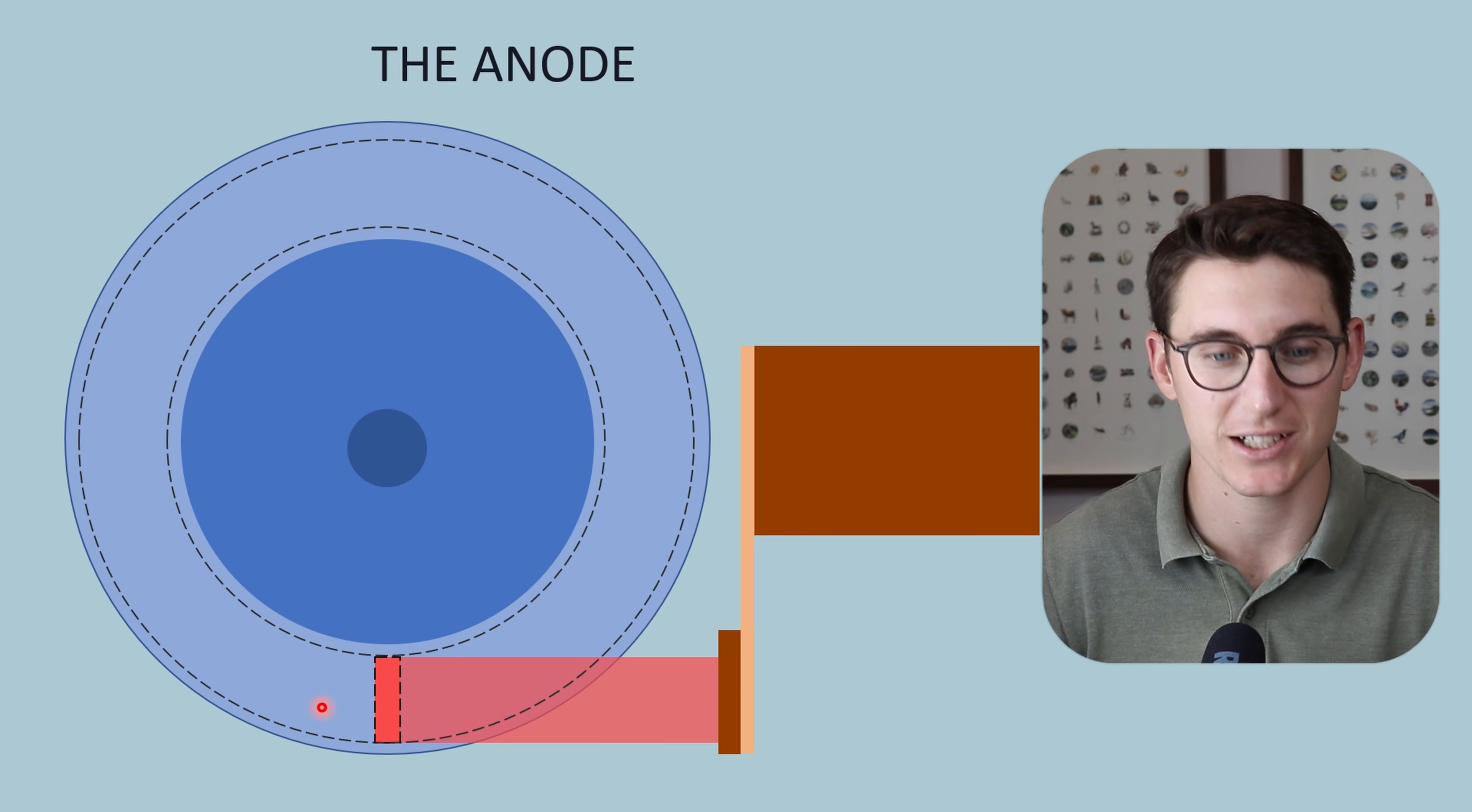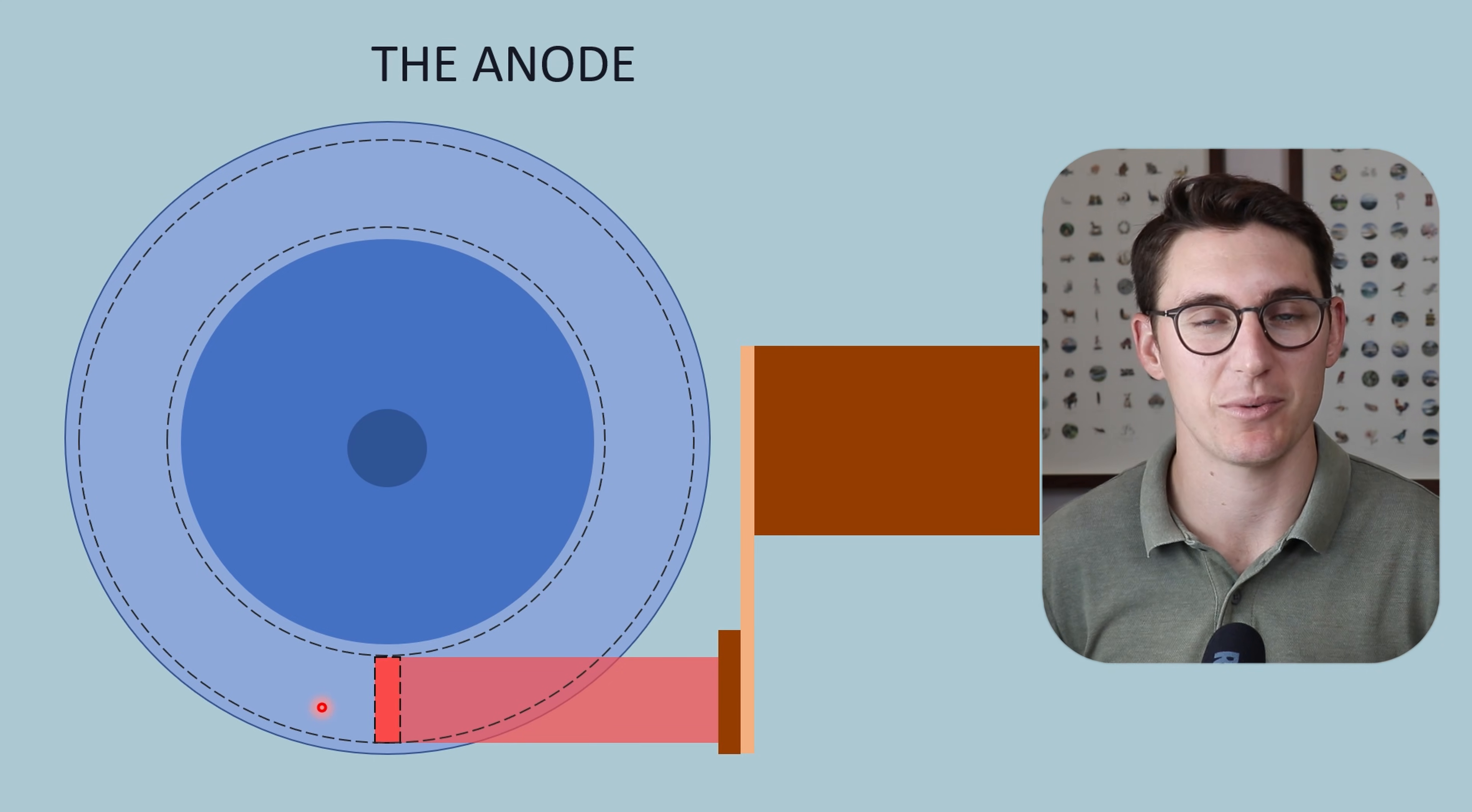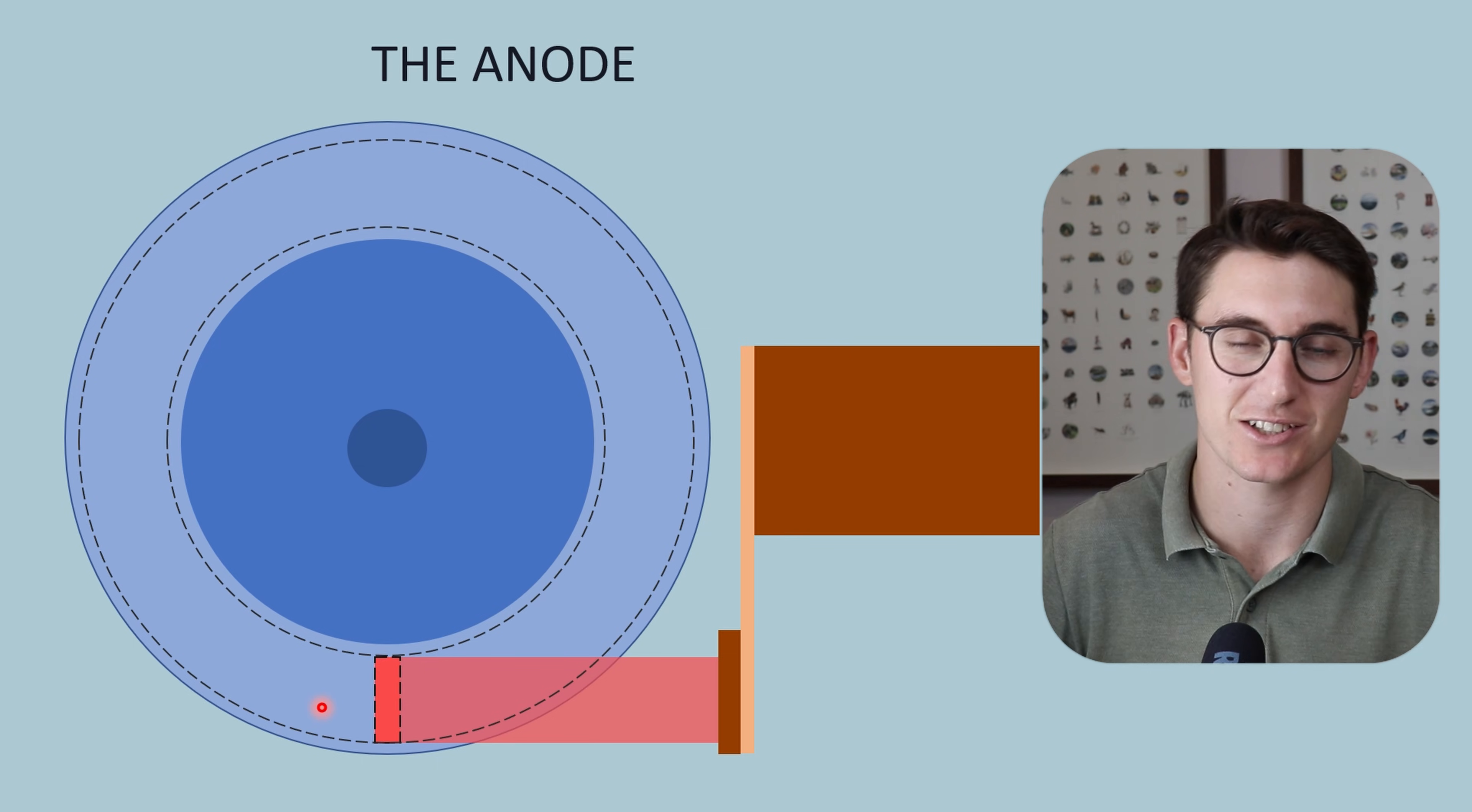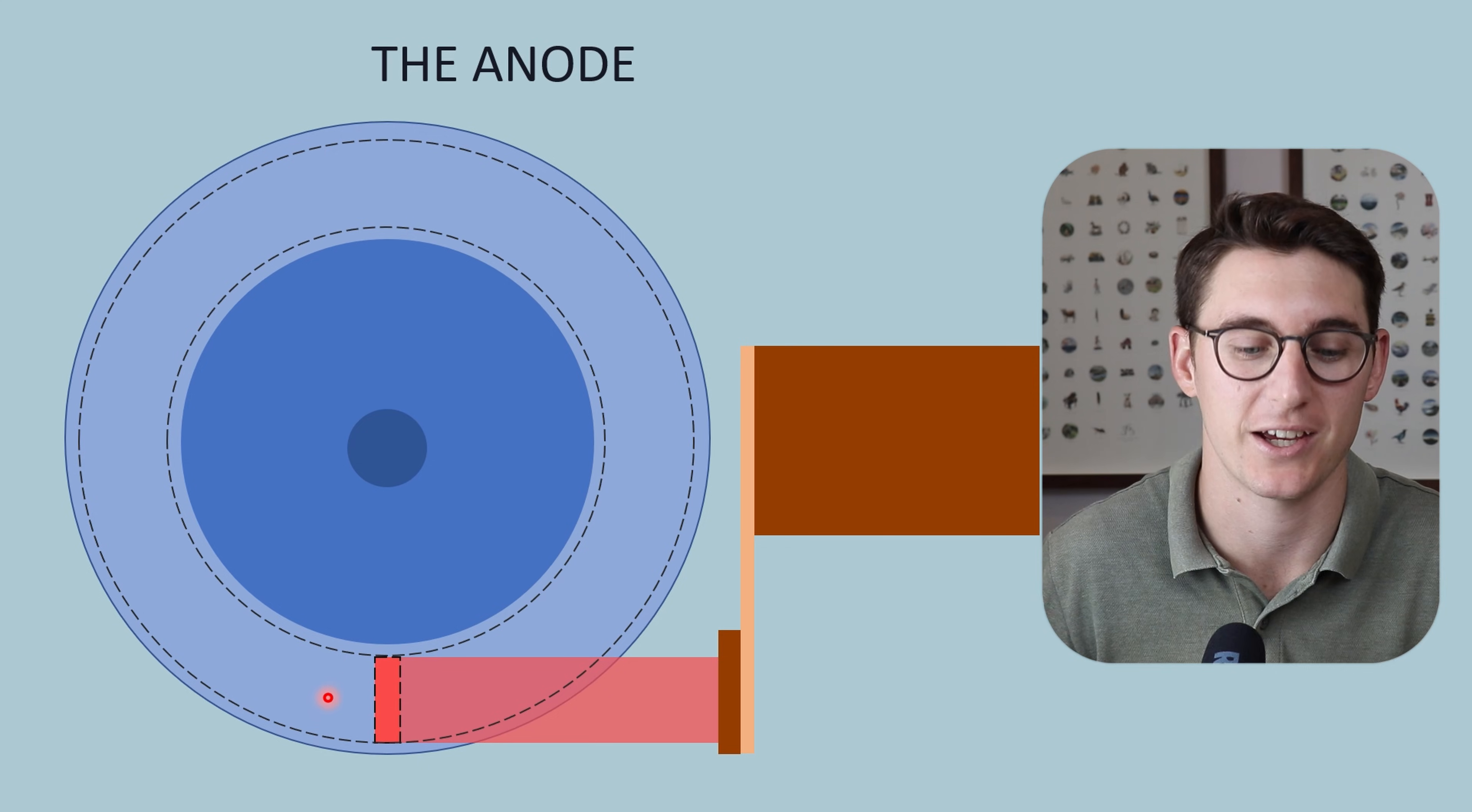The second is that it's made of tungsten. We saw in our tungsten filament that tungsten has a very high melting point. It's able to tolerate lots of heat while maintaining its structural integrity. Not only that, it's a good conductor of heat away from the anode.